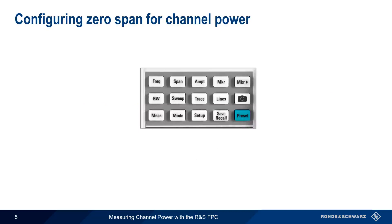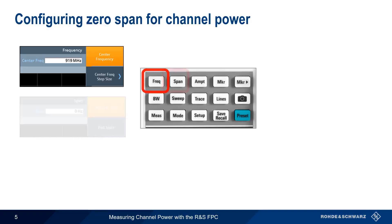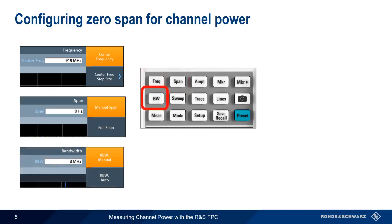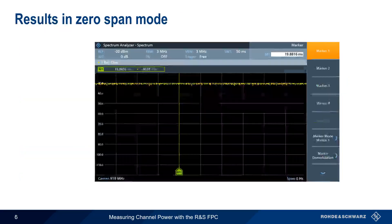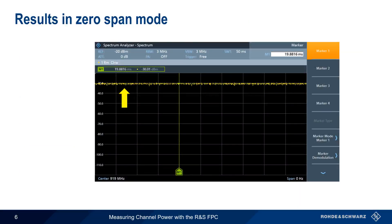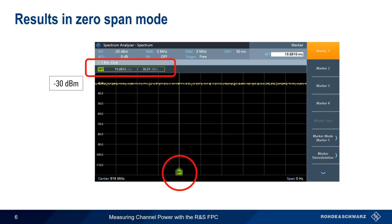To measure channel power on the FPC using zero-span mode, we simply set the center frequency, set span equal to zero, and then choose our resolution bandwidth. Recall that resolution bandwidth needs to be wider than the signal whose power we're measuring. And because we're measuring power, we also need to set our detector type to RMS. Assuming that the power of the channel is relatively constant, channel power should appear as a more or less horizontal line on the power versus time display, and we can either read the value from the vertical axis, or use a marker to obtain a more precise value.